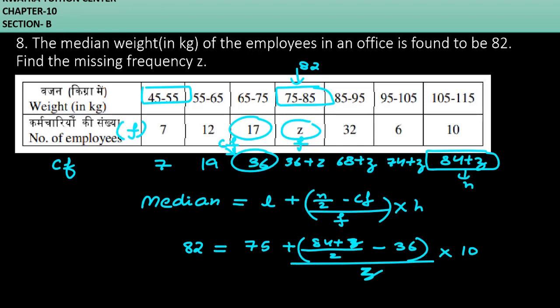We need to solve. First, 82 minus 75 gives 7. Here 2 and 2 can be reduced.